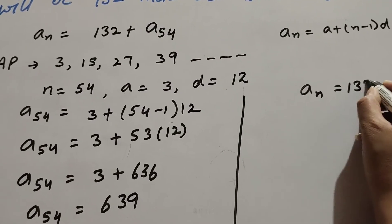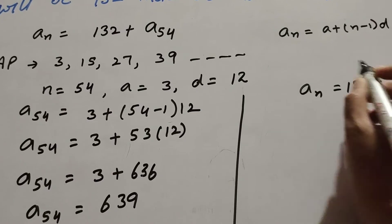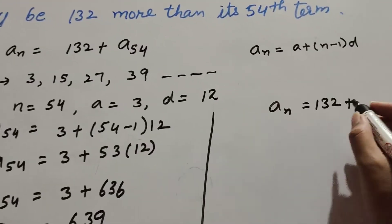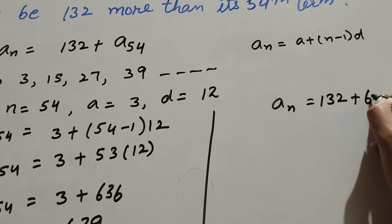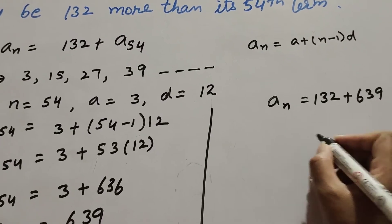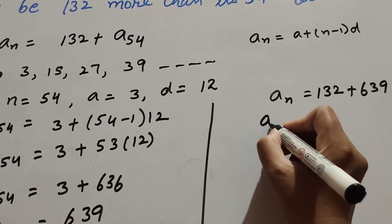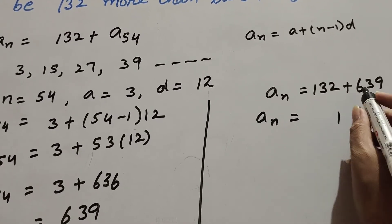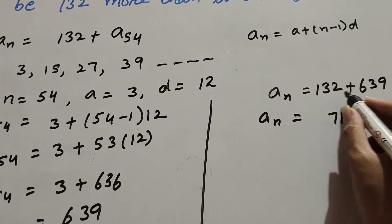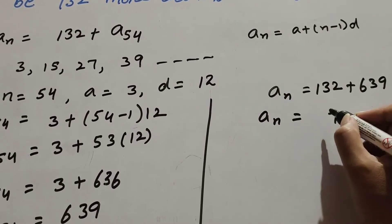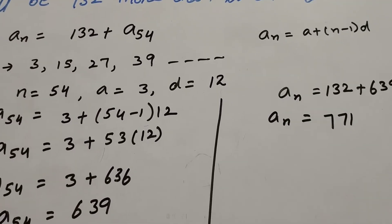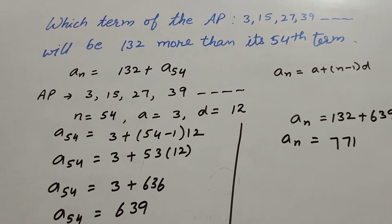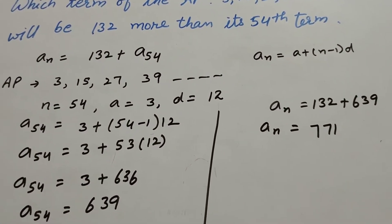So a_n equals 132 plus a_54. The 54th term of the AP is 639, so a_n equals 132 plus 639, which is equal to 771. So a_n equals 771.